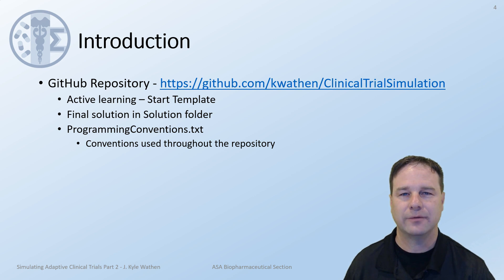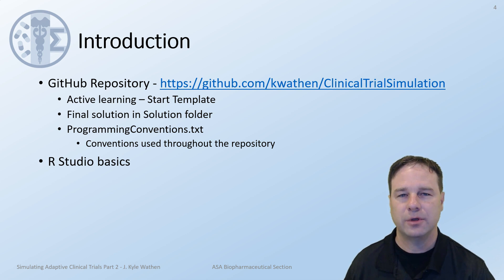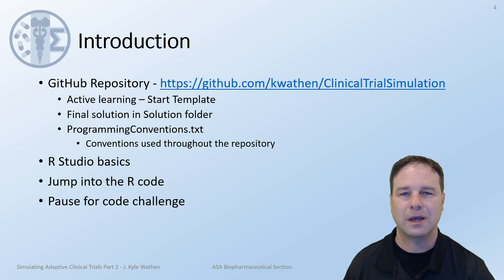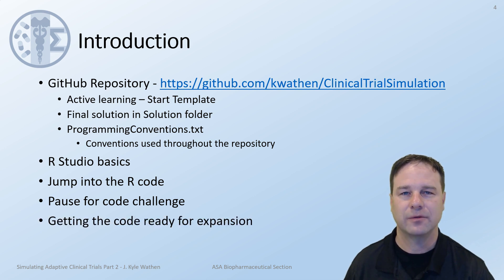We'll also look at the programming conventions — these are how I name variables and files throughout this course. This will help you understand how the code is written and where to find things. We're going to look at RStudio basics, some shortcuts that I routinely use to improve my productivity. We're going to jump right into the R code, walk through the template so that you know what is there and what is expected. Then we'll pause, give you an opportunity to work on the code, and then come back and compare it to the final solution. From that point we'll be getting it ready to expand further.